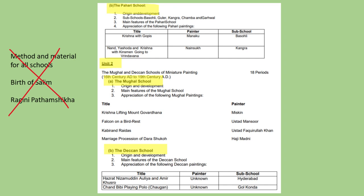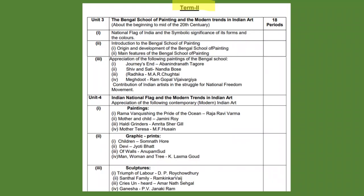In Pahadi school, everything else is there. In Mughal school, the birth of Salim painting is deleted, and in Deccan school, the painting of Ragini Patham Shikha is no more there. This is term 2. Paintings are also deleted in term 2, but we will not do that in detail in this video — we will do that later.